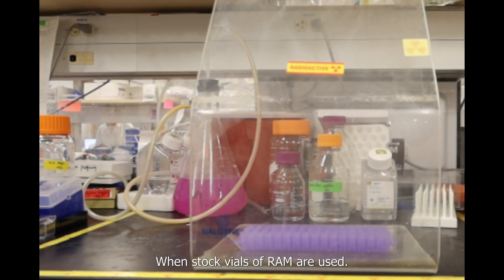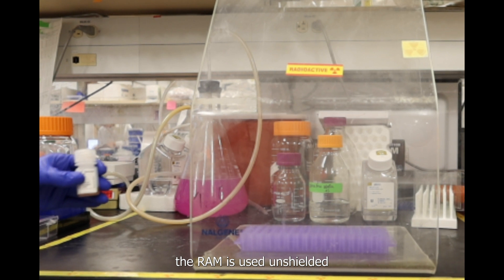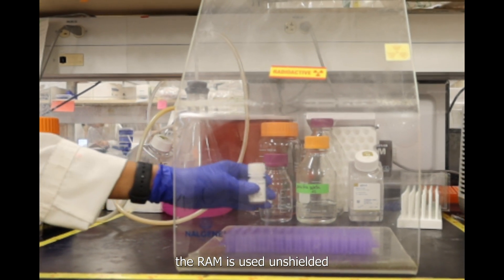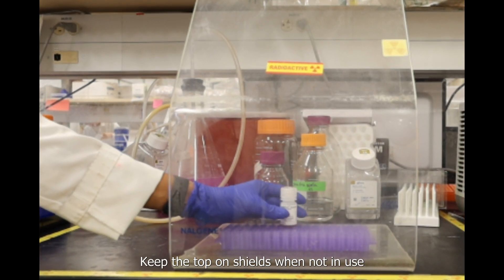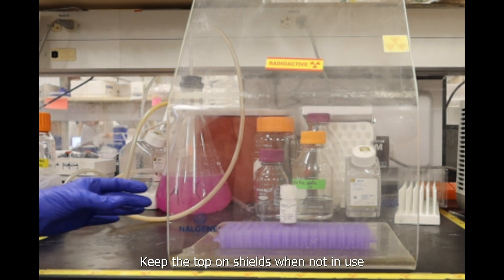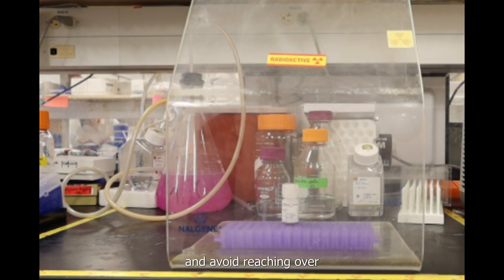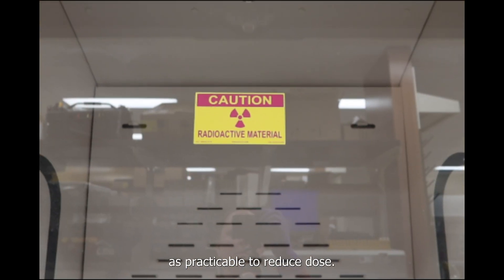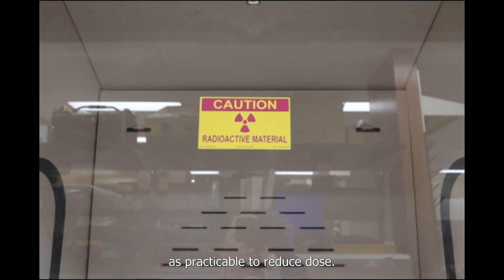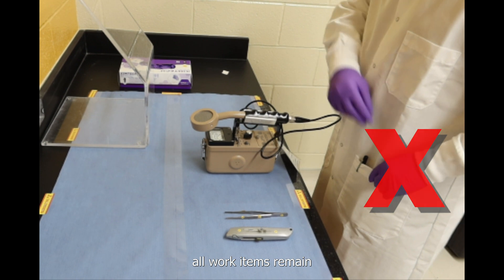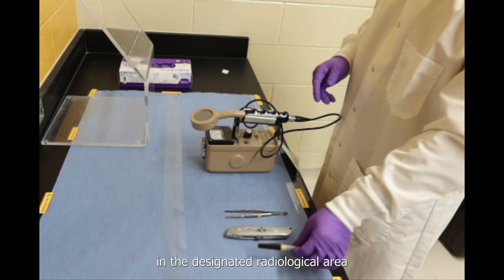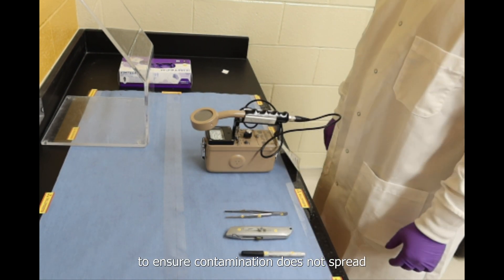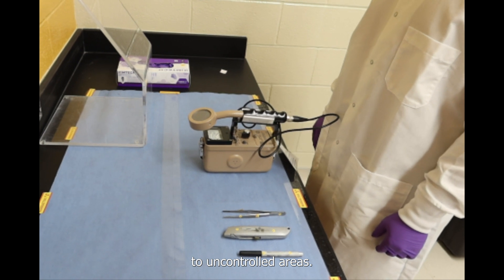When stock vials of RAM are used, minimize the time the RAM is used unshielded to reduce dose. Keep the top on shields when not in use and avoid reaching over any unshielded RAM. Keep RAM as far away as practical to reduce dose. Make sure all work items remain in the designated radiological area to ensure contamination does not spread to uncontrolled areas.